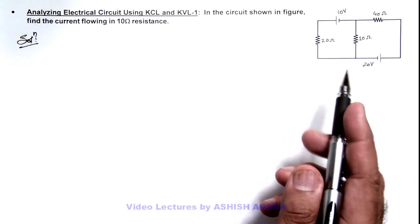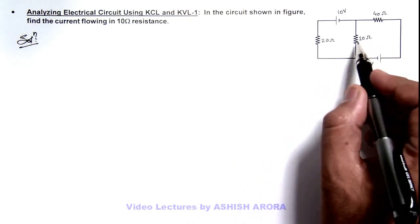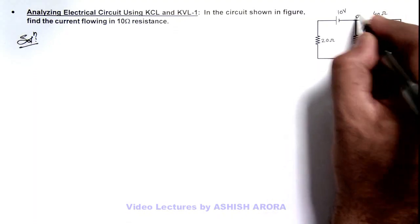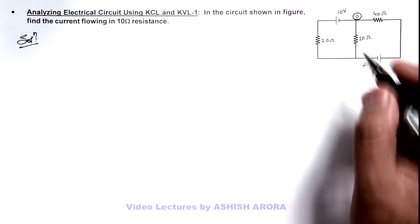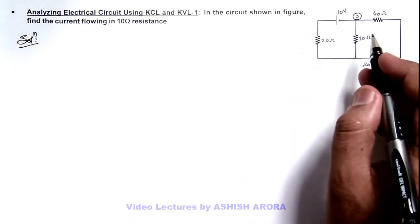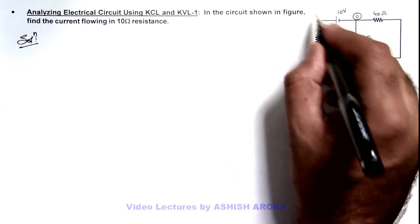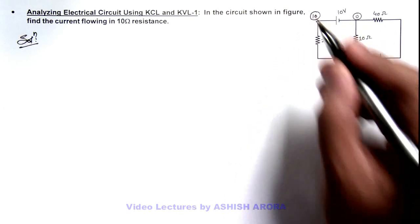We can take reference potential zero at any one point of the circuit, and correspondingly on one side of this battery we can consider potential to be 10 volt.